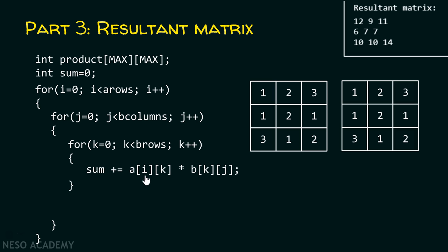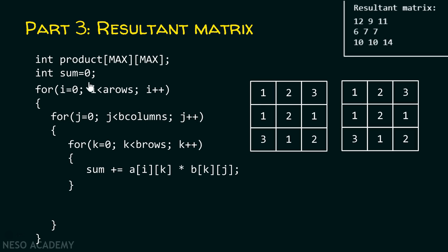Index i indicates the row number of matrix A and index j indicates the column number of matrix B. Initially we are in the first row of matrix A and first column of matrix B. We use k to traverse the columns of matrix A's row one by one while simultaneously traversing the rows of matrix B. When i=0, j=0, k=0, all indexes are zero — we are at the zeroth row and zeroth column of matrix A, taking that element, and at the zeroth row and zeroth column of matrix B. We multiply them together and add to sum. Sum initially contains zero, so the result stored in sum is one.